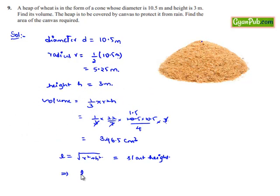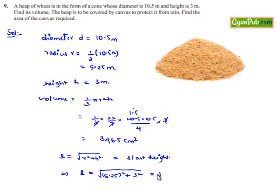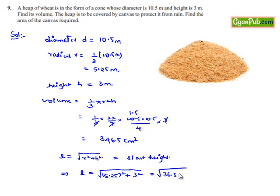That implies l is equal to square root of r², that is 5.25 whole square plus h², that is 3 square, that is equal to square root of 36.5625, that is approximately 6.05 meters. Here we also got this slant height, that is 6.05 meters.